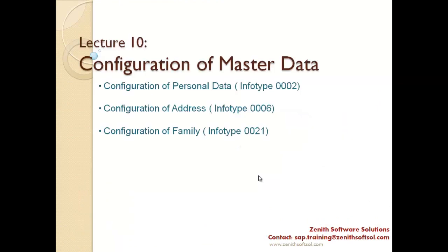Hello everyone. We are going to learn how to configure the master data. You must have learned about the info types in my previous lectures — what info type 1, 2, 6, 7, 9 means. If not, I recommend you go back to the PA30 transaction code and look at each info type to understand what fields are stored. In today's class, let's understand what values can be configured for these info types.